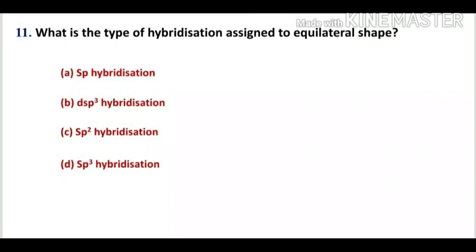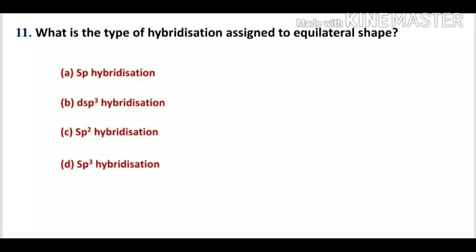Question number 11: what is the type of hybridization assigned to the equilateral shape? Option A, SP hybridization; option B, DSP3 hybridization; option C, SP2 hybridization; option D, SP3 hybridization. The equilateral shape is essentially the trigonal shape, which assumes SP2 hybridization, so option C is the correct option.